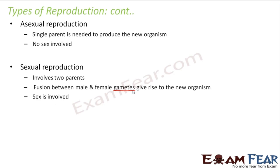In sexual reproduction, a male sex cell and a female sex cell fuse together to form the new organism. Since everything happens by the combination of two parents, the daughter is genetically different from the parents. The two parents themselves have different traits, so the new organism will have traits from both of them and may also have some new traits — that is called variation. However, the multiplication rate in sexual reproduction is lower compared to asexual reproduction, which is a faster mode.